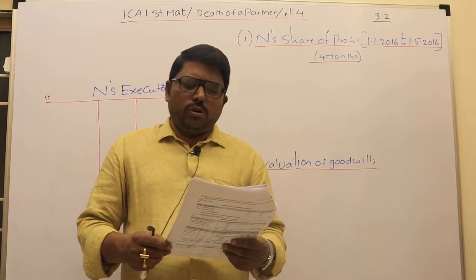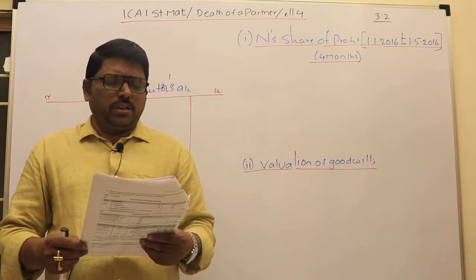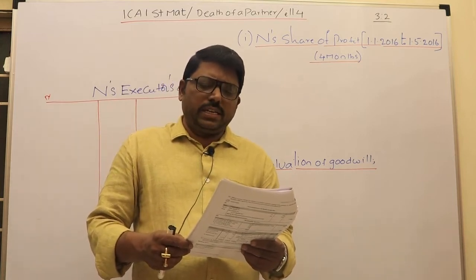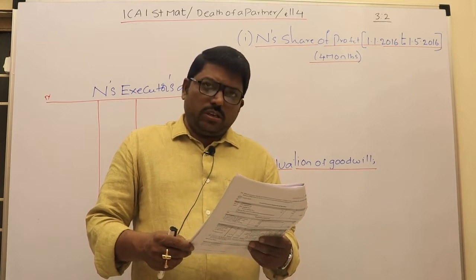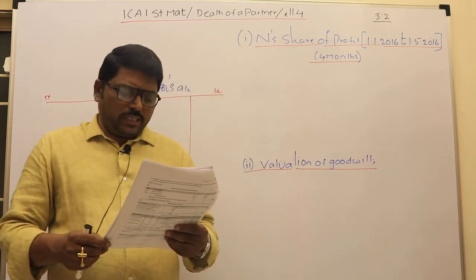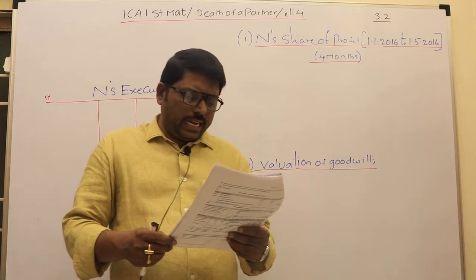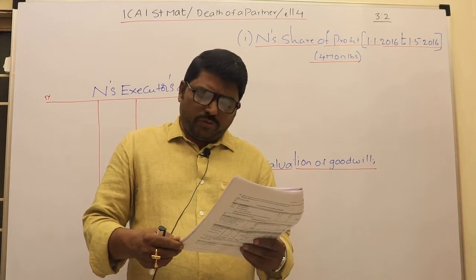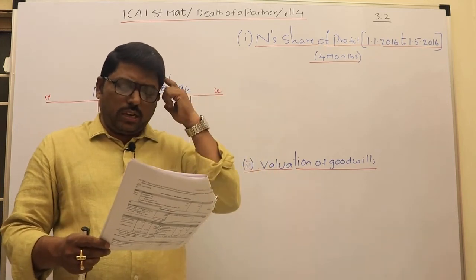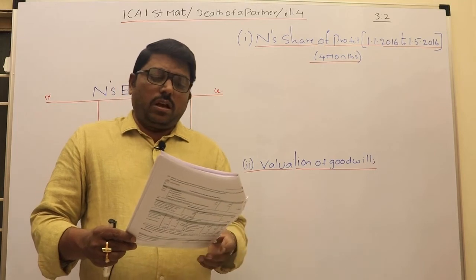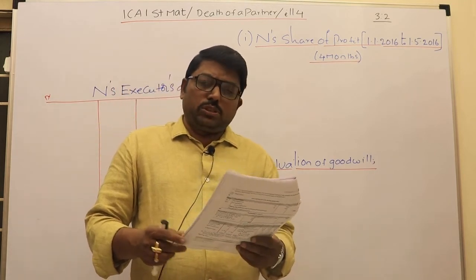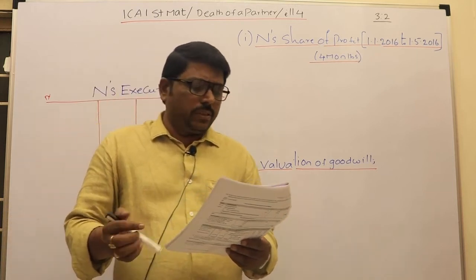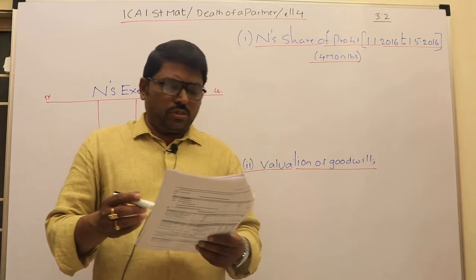His share of goodwill is also to be given, based on 3 years' purchase of average profits for the preceding 3 completed years. You take the last 3 years' profits, total them, divide by 3 to get the average, then multiply by 3 — which gives the firm's goodwill. Both the profit share and goodwill share are to be given.